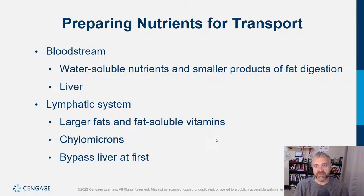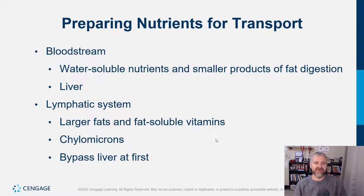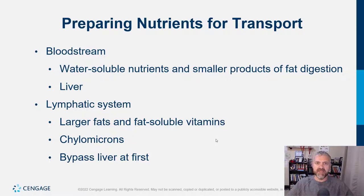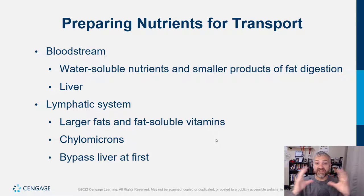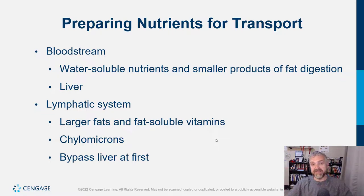Large fats — your long-chain fatty acids — and fat-soluble vitamins, which are vitamins A, D, E, and K, are going to be carried in your lymphatic system. They have to be put into these huge packages called chylomicrons. You don't want these big fatty packages swimming through your bloodstream right away, so the chylomicron travels through your lymphatic system while the fats are distributed, and then what's left over is dumped into your bloodstream for your body to handle more easily.